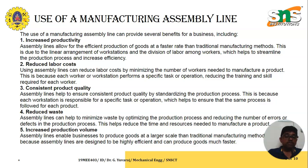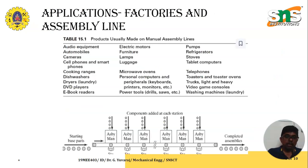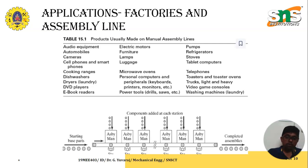Some of the equipment manufactured with the help of manual assembly lines includes audio equipment, electric motors, pumps, automobiles, furniture, refrigerators, cameras, luggage, tablet computers, cooking ranges, microwave ovens, telephones, dryers, and personal computers — all of which are shown on screen.